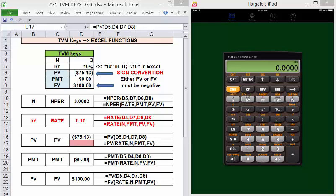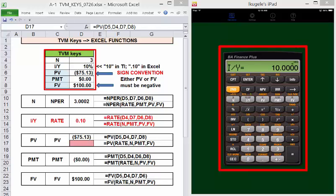Let's do the present value function in the calculator and in Excel. In our calculator, n is 3, IY is 10, payment is 0, 100 future value, compute present value, 75.13.15.